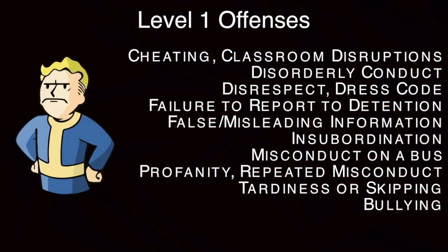Okay Mustangs, I'm going to discuss with you level 1 offenses. Your level 1 offenses include cheating, classroom disruption, disorderly conduct, disrespect, dress code, failure to report to detention, false misleading information, and insubordination.